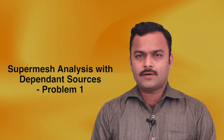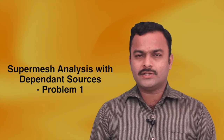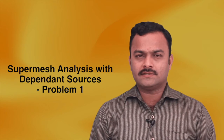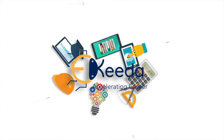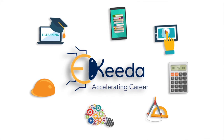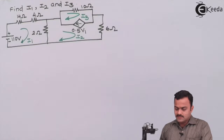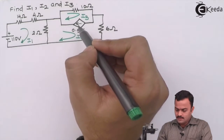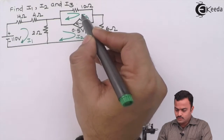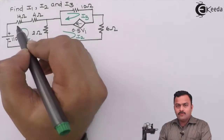In this video we are going to see how to apply mesh analysis technique whenever a current source is present between two meshes, and the circuit consists of a combination of dependent and independent sources. Here is the problem where we have to find mesh currents i1, i2, i3. The speciality of this problem is that we have a current source which is a dependent source but it is common between two meshes.